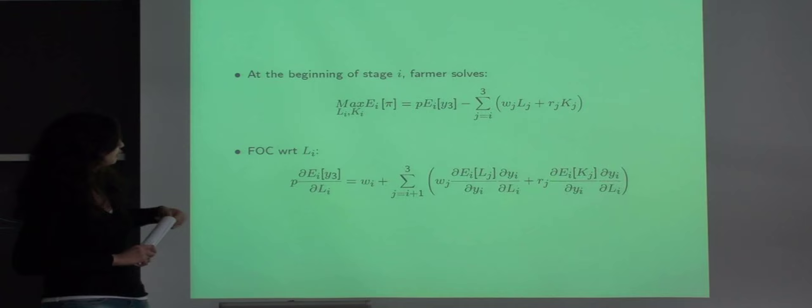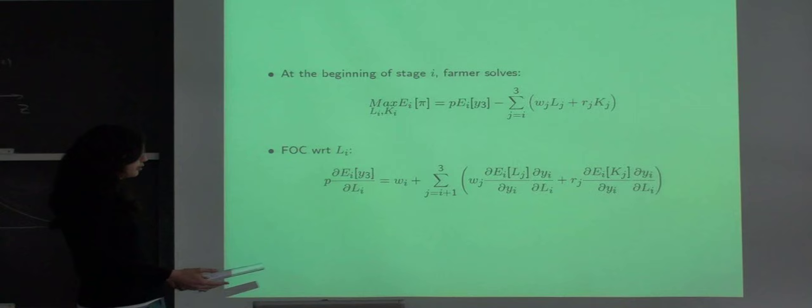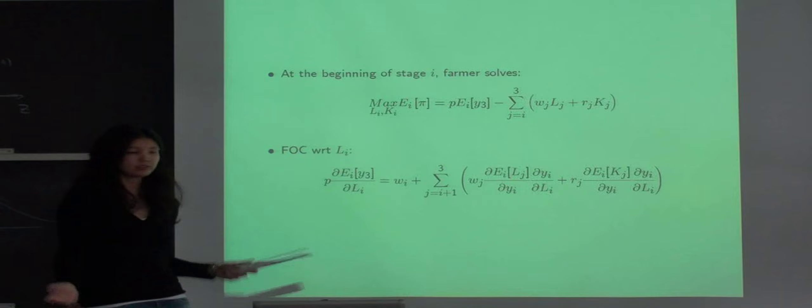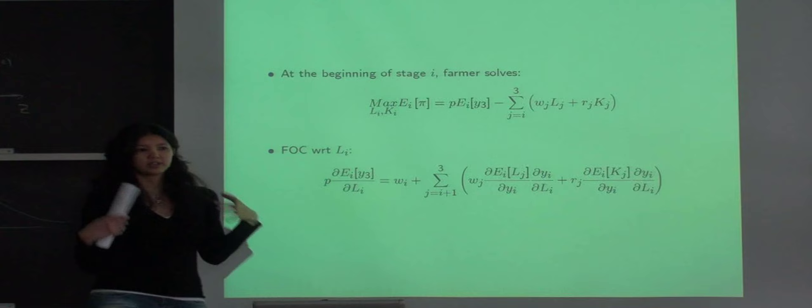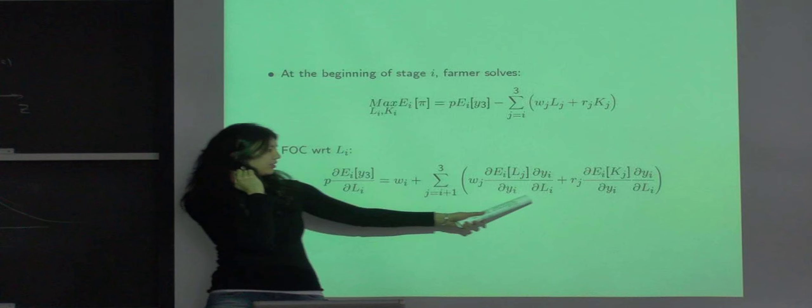If we look at the first order condition for intermediate input, in this case intermediate labor, we see that its marginal cost and marginal product has two components. One is the current component which is just the current price of the input. And another is the future component which reflects changes of farmers' adjustments of input levels in future stages in response to changes in crop growth development due to changes in levels of current inputs used.